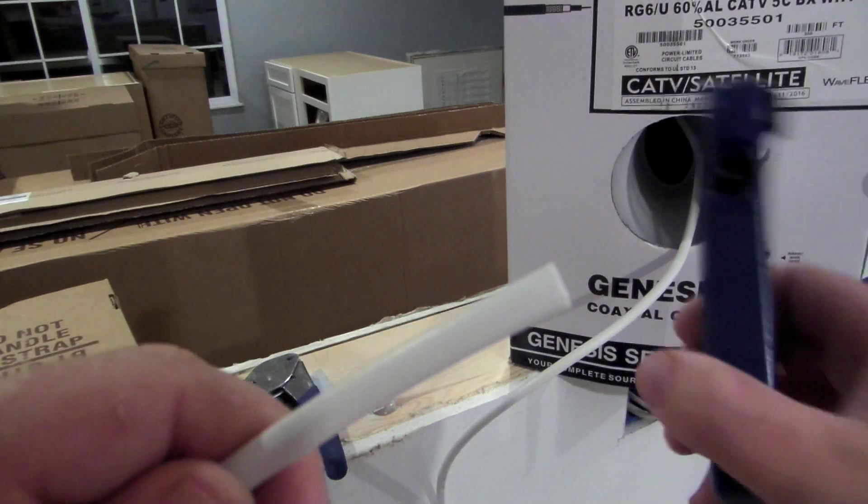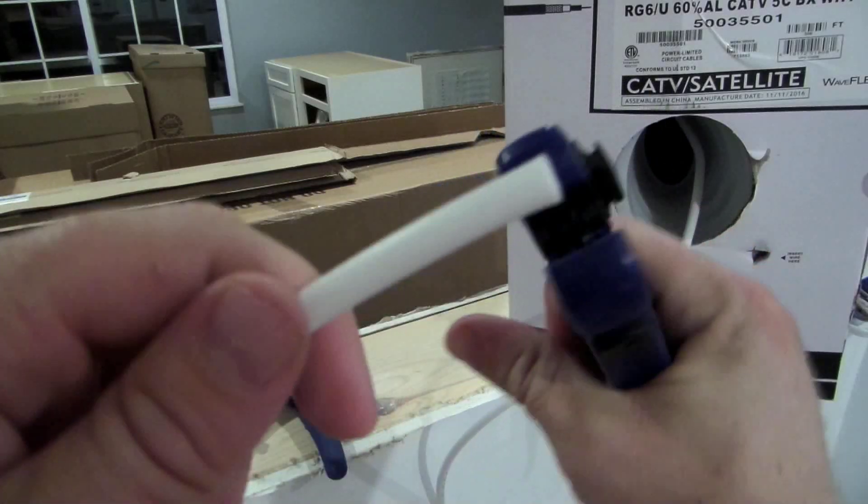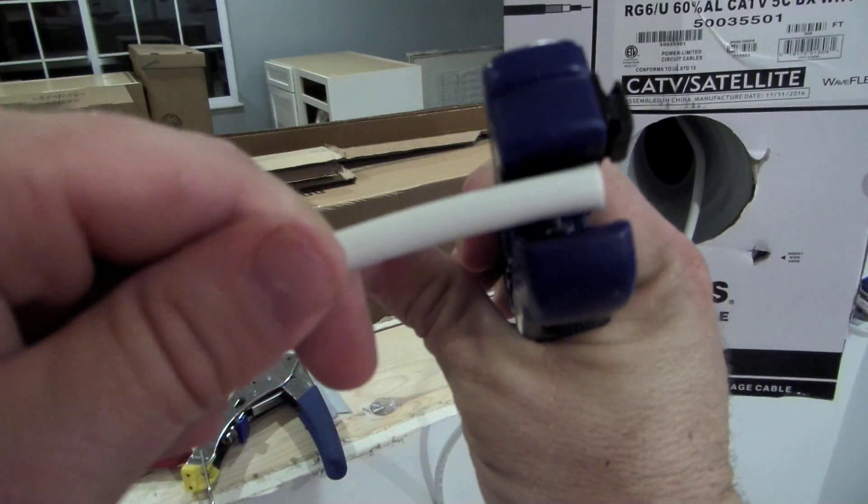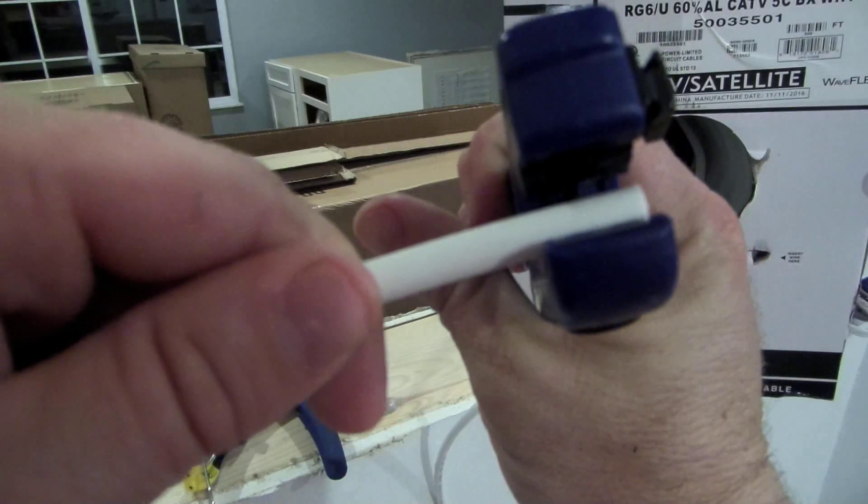Okay, now we're going to go ahead and strip this wire. We're going to take our special wire stripper here. We've already got one from before. We're going to lay this in here so it's right on the edge.